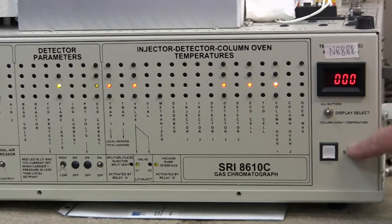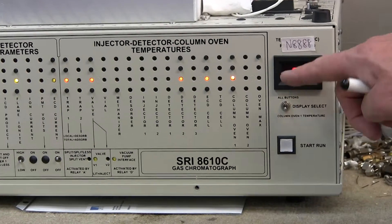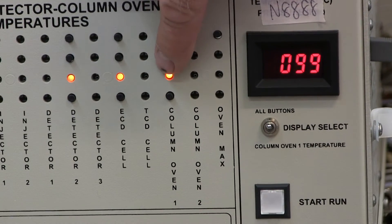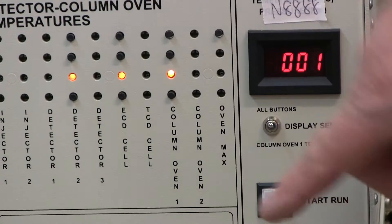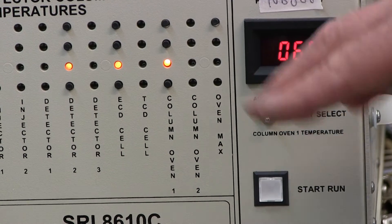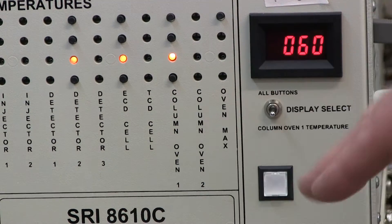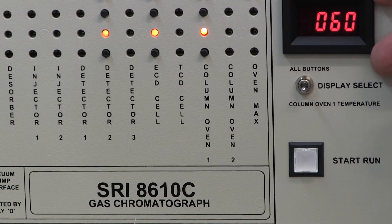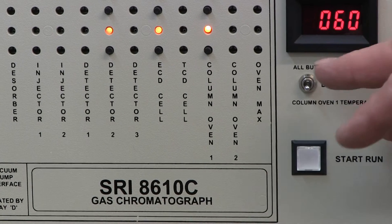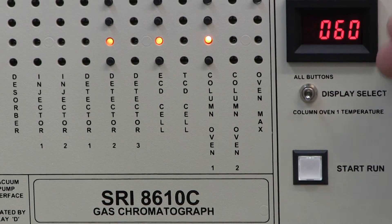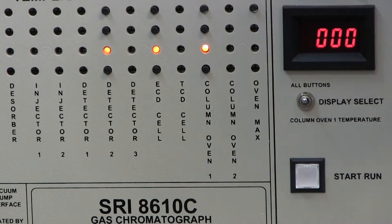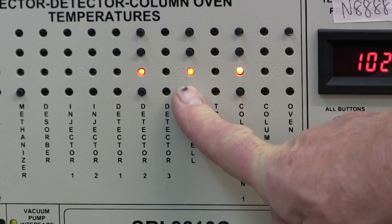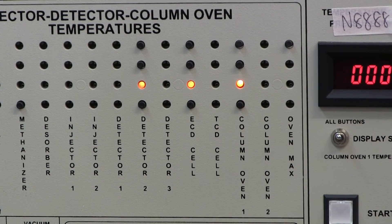Also there's a switch here below the display meter. When you flip the switch up, it allows you to read whatever button you depress. If you flip the switch down, it only reads constantly the column oven temperature. That's because most of the time, that's the thing that's changing during the analysis is the column oven temperature. But if you want to read, for instance, the ECD detector temperature, then you have to flip the switch up and then push the button that says ECD cell temperature.